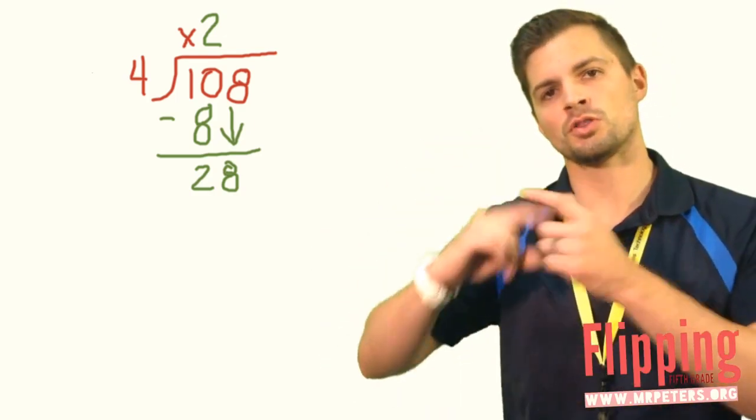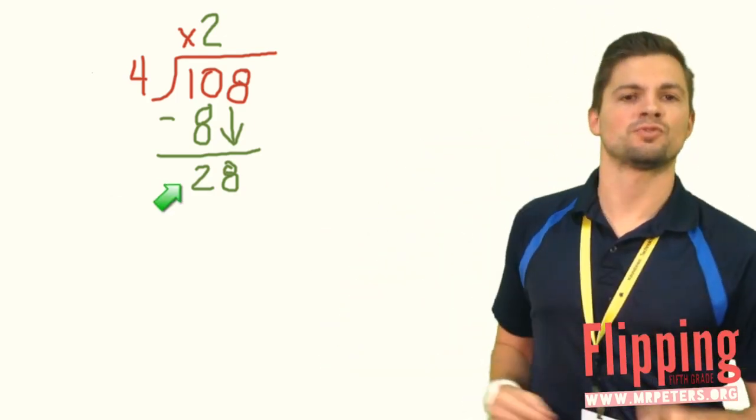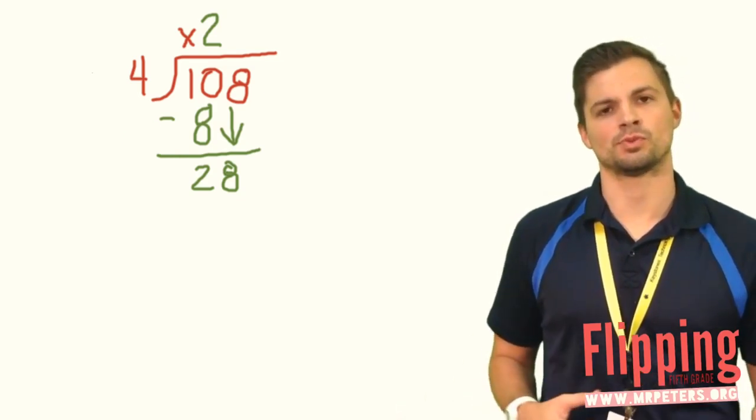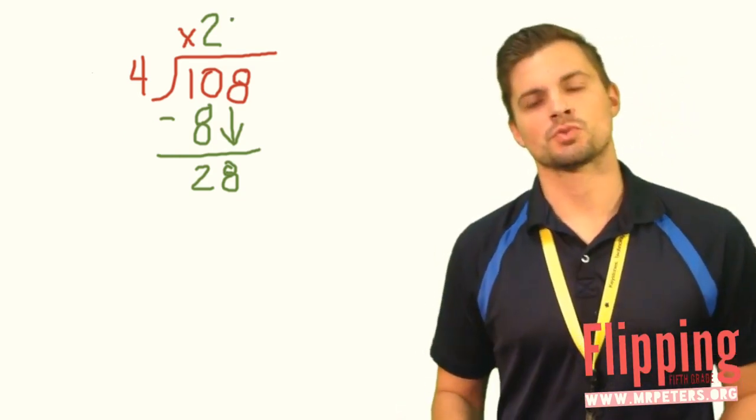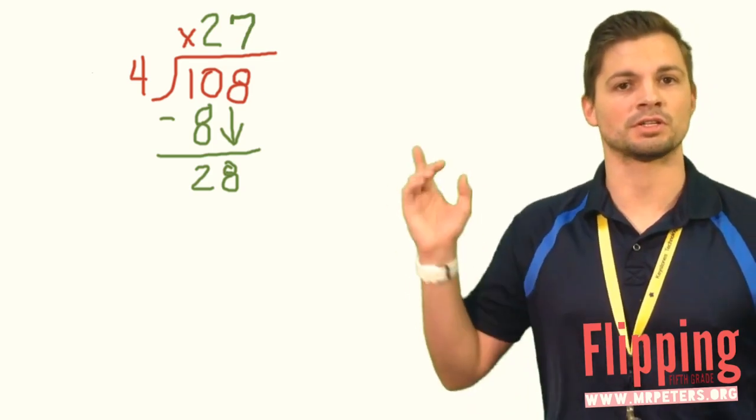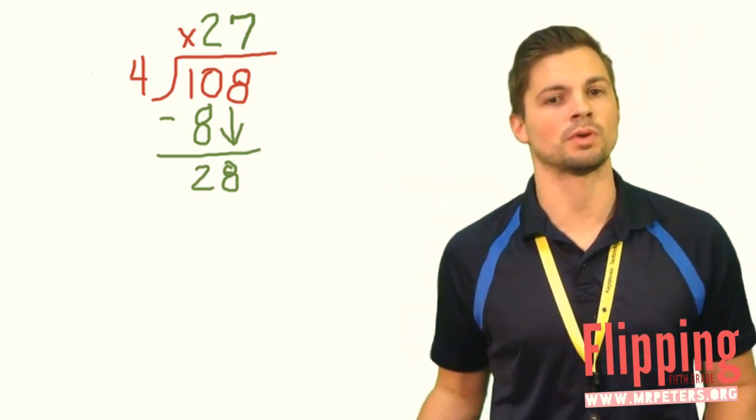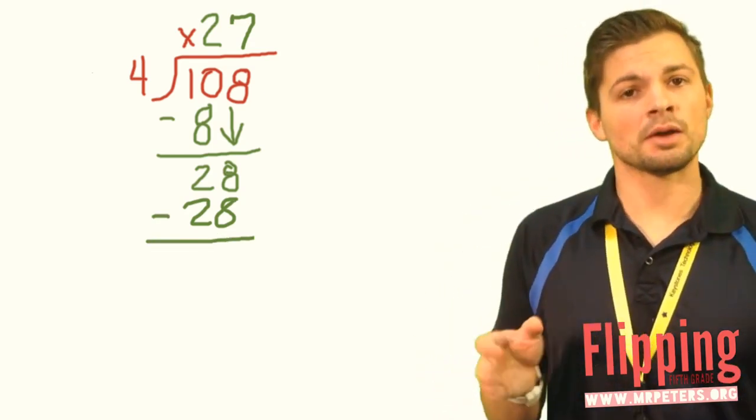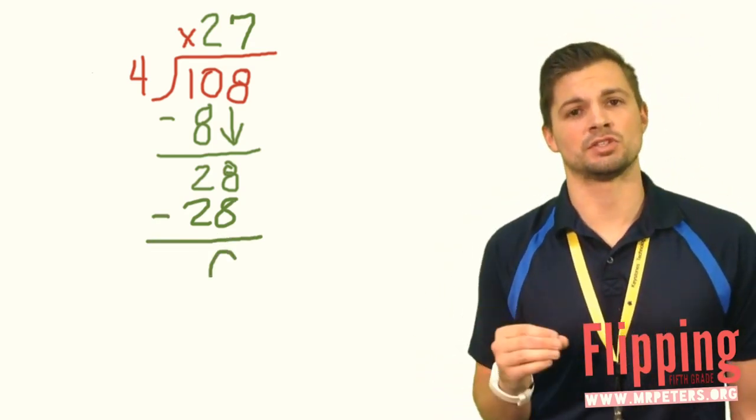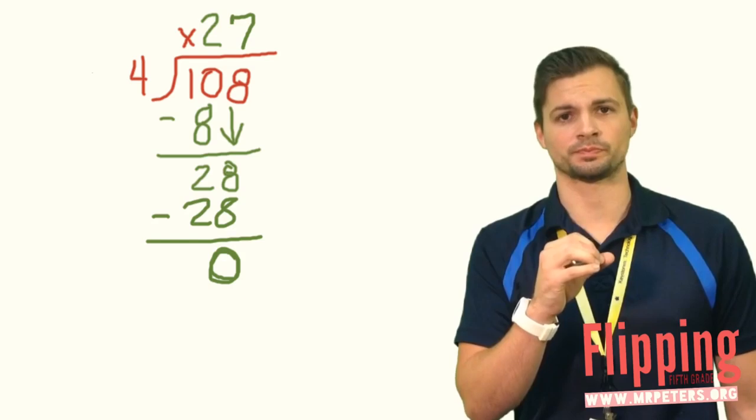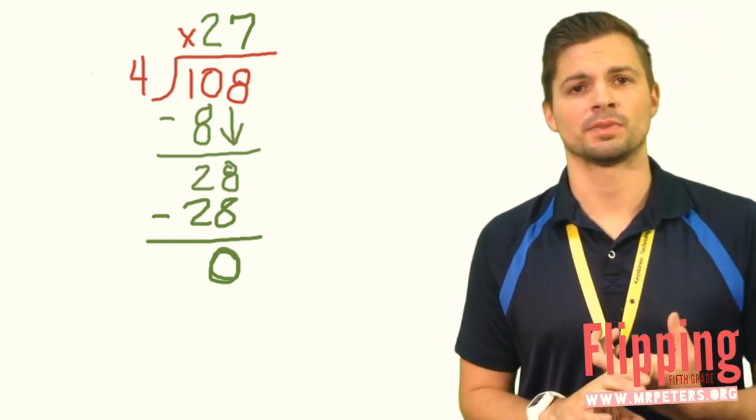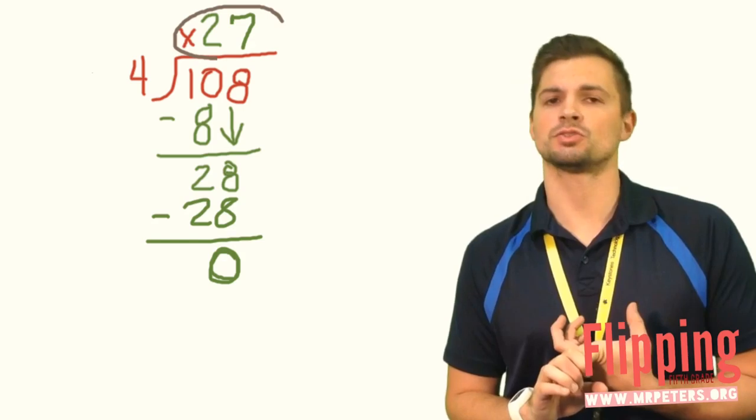So now we do all the steps again. How many times does 4 go into 28? The answer is 7. We're going to put that 7 above the 8. We take 7 times 4, which is 28. Drop it down below the 28. Now we take 28 minus 28, and that's going to give us 0. So we don't have a remainder for this one. Our quotient for 108 divided by 4 is 27.